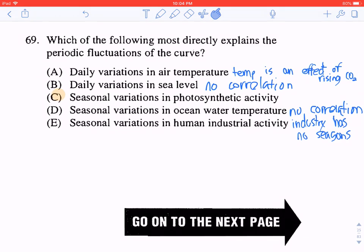Question 69: Which of the following most directly explains the periodic fluctuations of the curve? It wouldn't be A, because temperature is an effect of rising CO2. It wouldn't be B, because variations in sea level has no correlation. It wouldn't be D, because seasonal variations in ocean water temperature has no correlation.